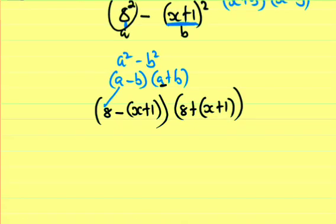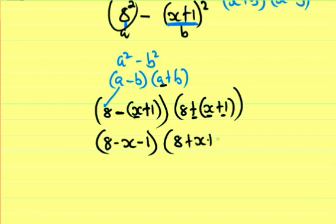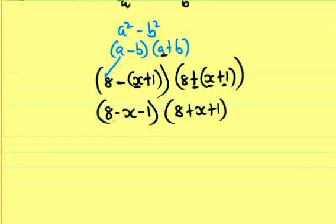Removing the brackets: 8 minus x minus 1. In the second bracket, 8 plus x plus 1. This gives us (8-x-1)(8+x+1), which simplifies to (7-x)(9+x).